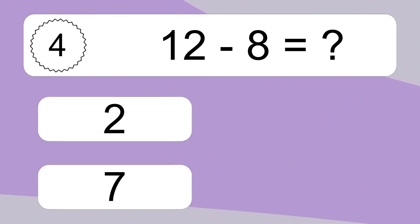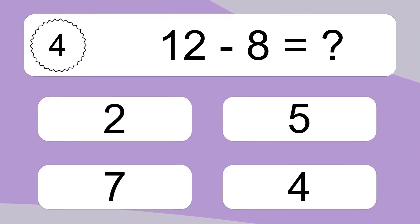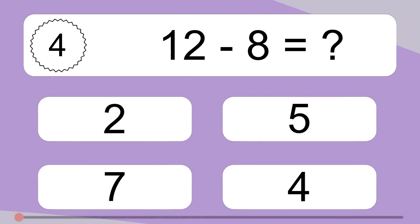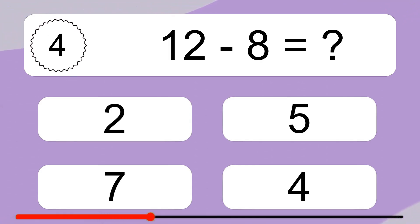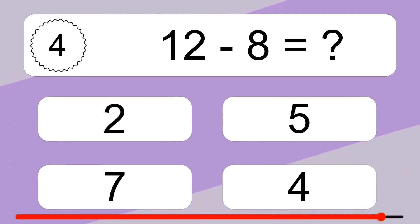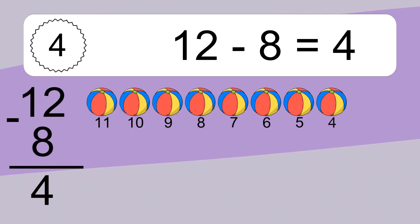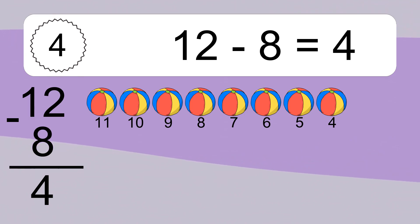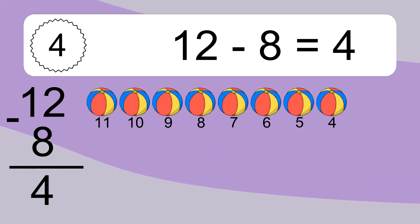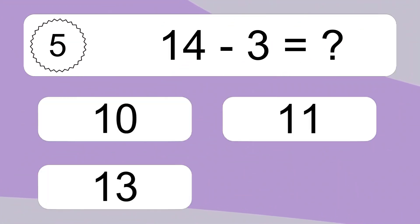12 minus 8 equals what? 12 minus 8 equals 4. Let's count it: 11, 10, 9, 8, 7, 6, 5, 4.